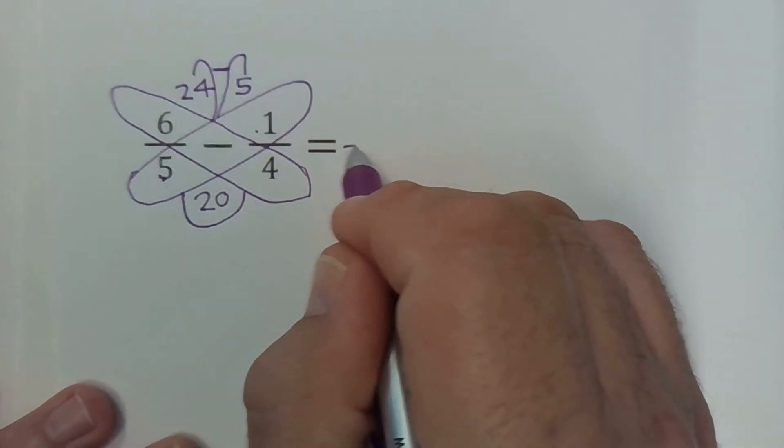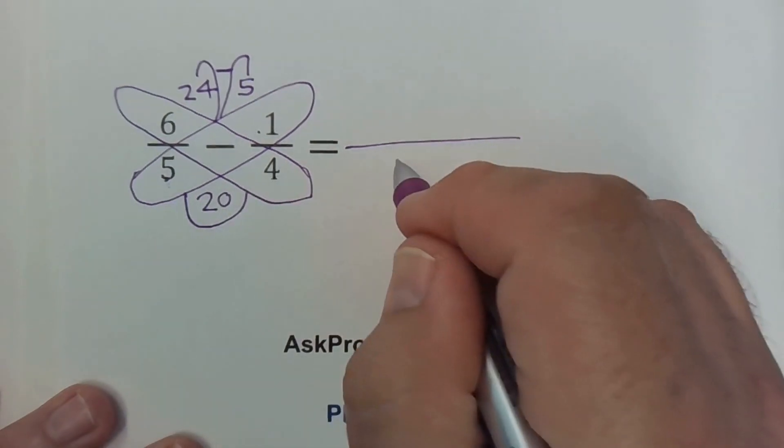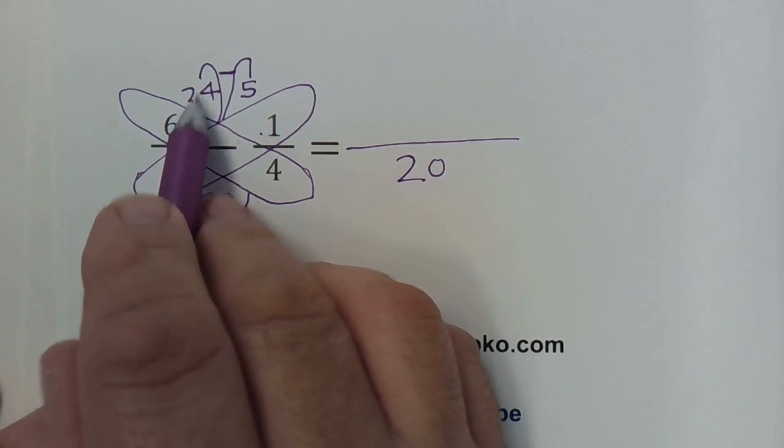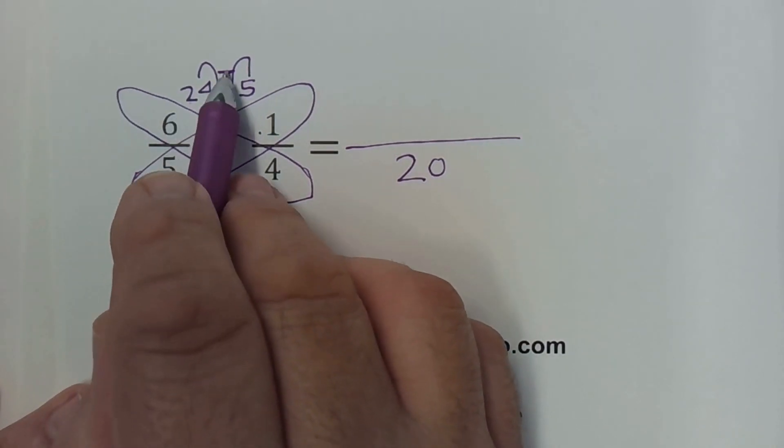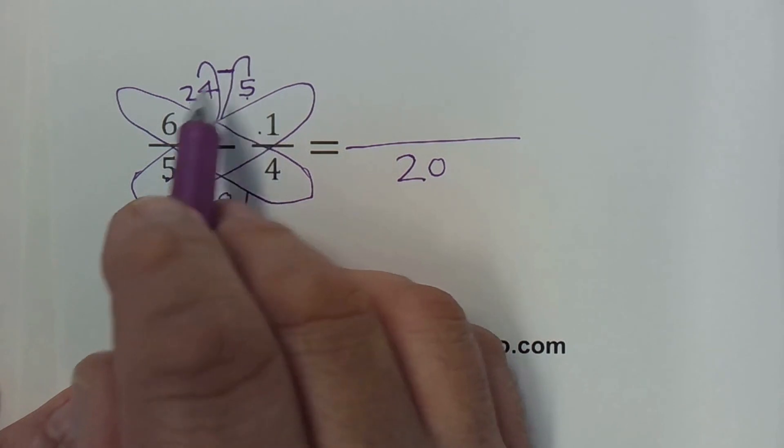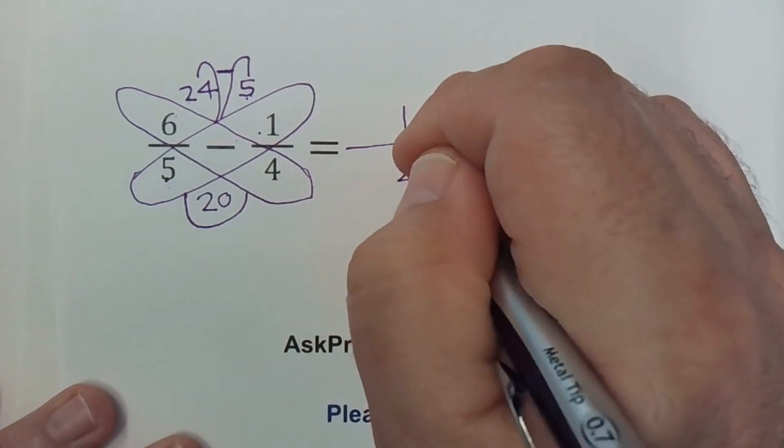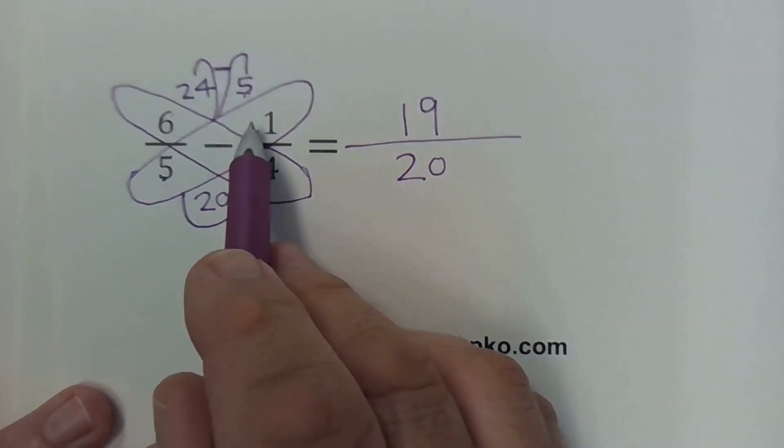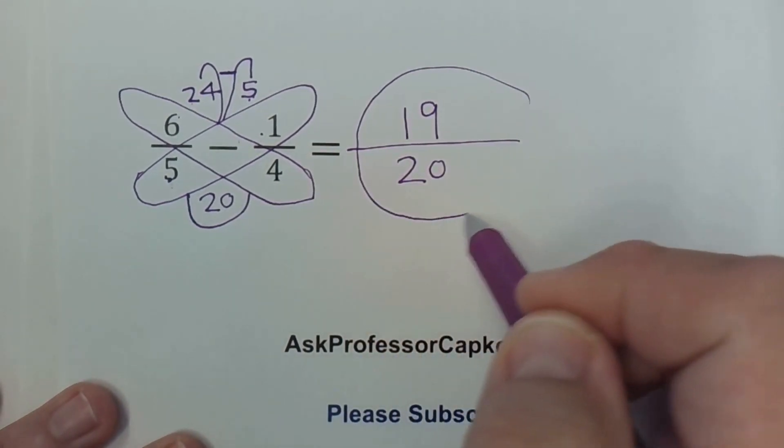Now I draw my line for my equal sign. I take whatever is in the body and I put that as my denominator, 20. And then up here I take this and follow the sign. So I've got 24 minus 5. 24 minus 5 is 19. So the answer to subtracting six-fifths, I'm subtracting one-quarter, is 19 twentieths.